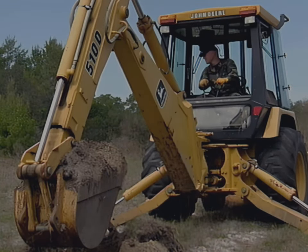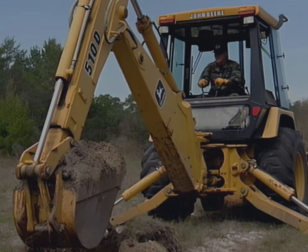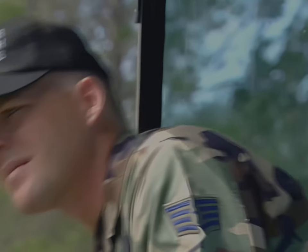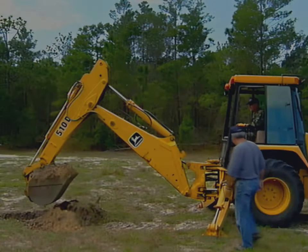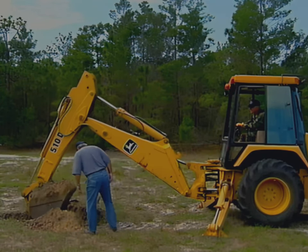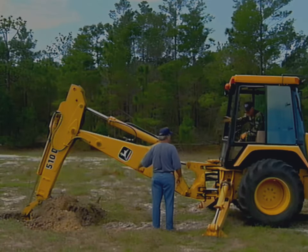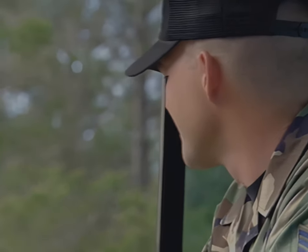Our next step is to swing the loaded bucket toward the dump site. Before we swing the bucket, let's discuss this potentially hazardous situation. The danger area is sometimes referred to as the pinch zone. This zone covers the 180-degree boom swing arc from outrigger to outrigger. It's your responsibility to ensure the area is clear of all people and equipment before swinging the boom. If someone is in the pinch zone, ground the bucket and remove your hands from the controls until they have moved out of the way. Never swing any part of the rear bucket assembly over or in the direction of people or equipment.